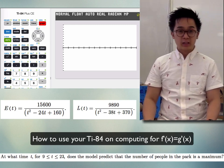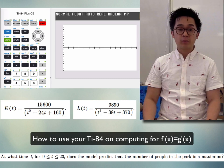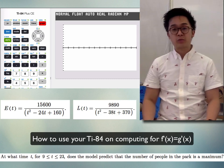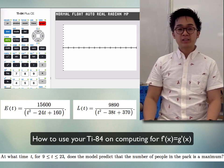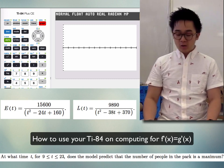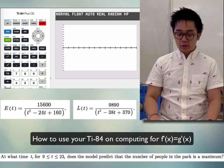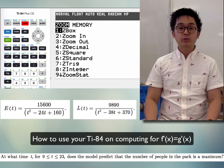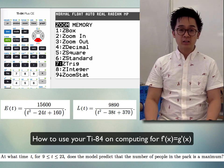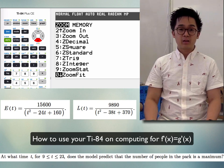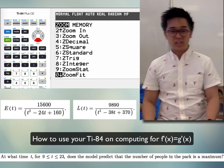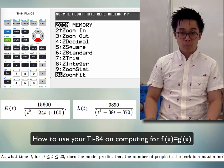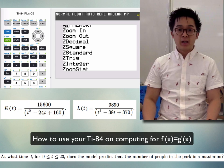The calculator now shows the function over the interval 9 to 23, but we're still not seeing the graph. When this happens, go to ZOOM and select Zoom Fit. Go down using the cursor to option 0, which is Zoom Fit, and push Enter.